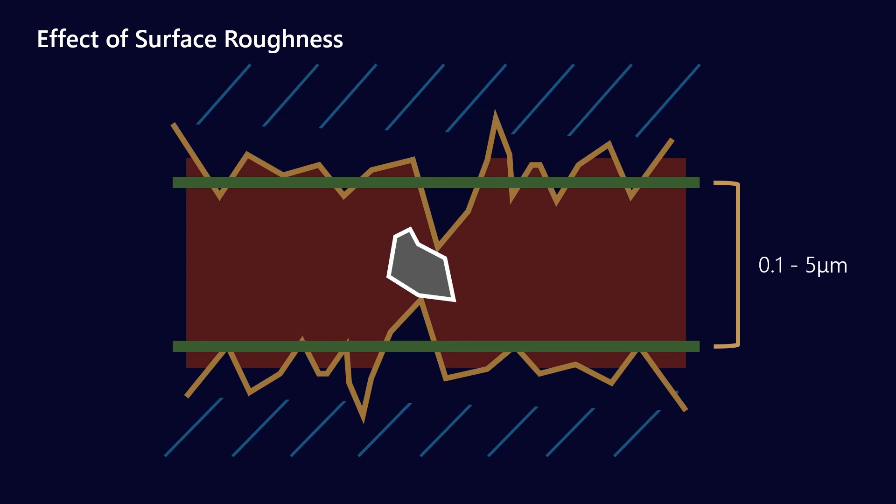So we can resist this in two ways. If we have an application with a higher degree of surface roughness, then we either need to increase the viscosity of the lubricant that we are using, or we need to filter down to a lower level.